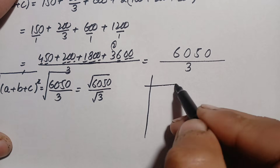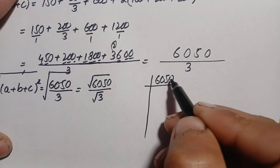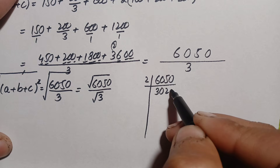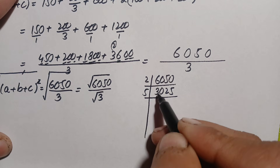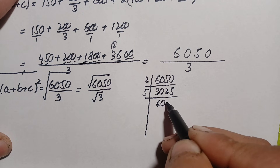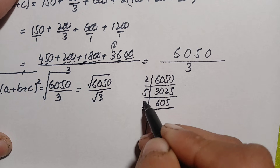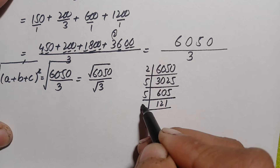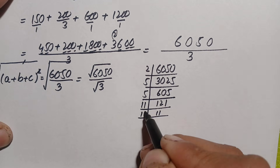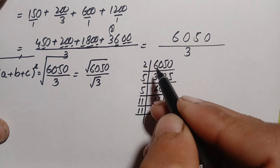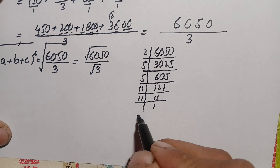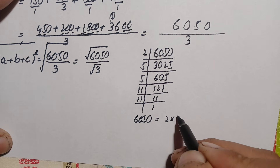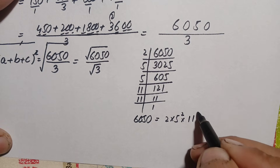6050 is an even number divisible by 2: 2 times 3025. 3025 is divisible by 5: 5 times 605. 605 is divisible by 5: 5 times 121. 121 is divisible by 11: 11 times 11. So the prime factorization of 6050 is 2 times 5 squared times 11 squared.